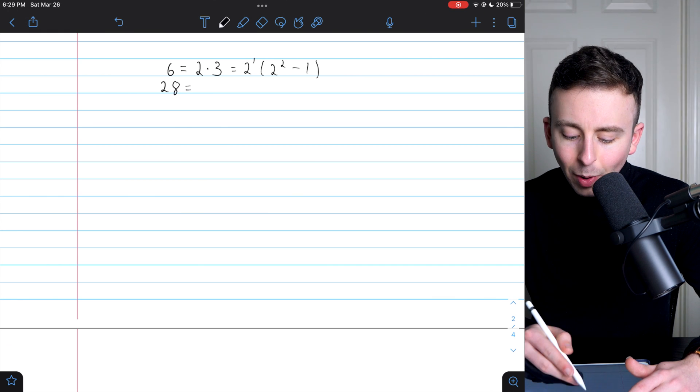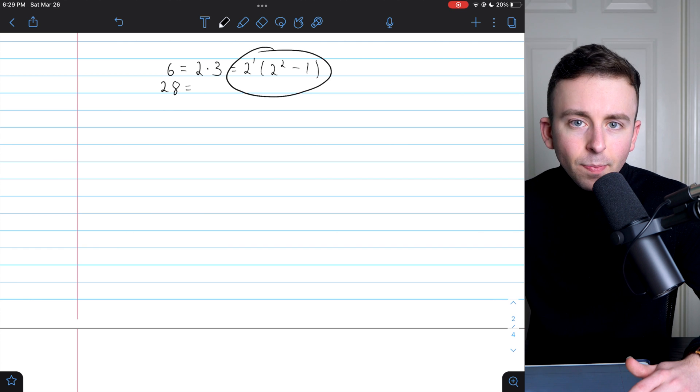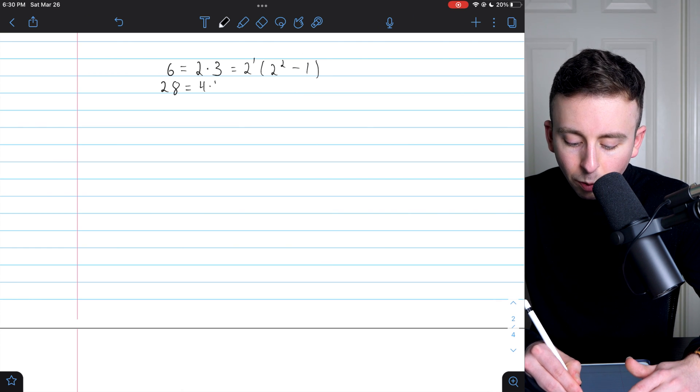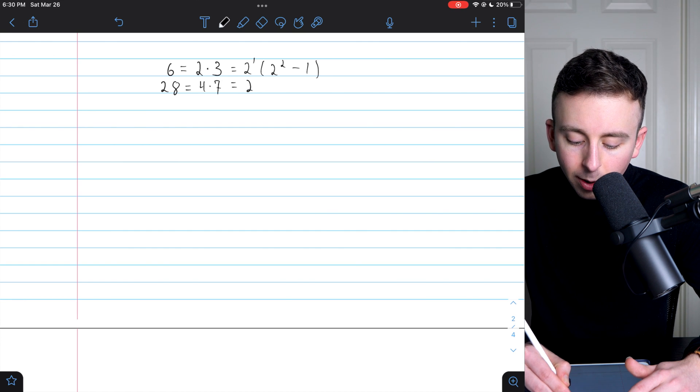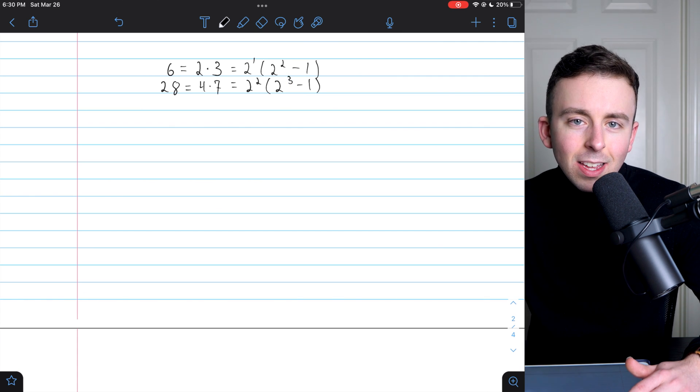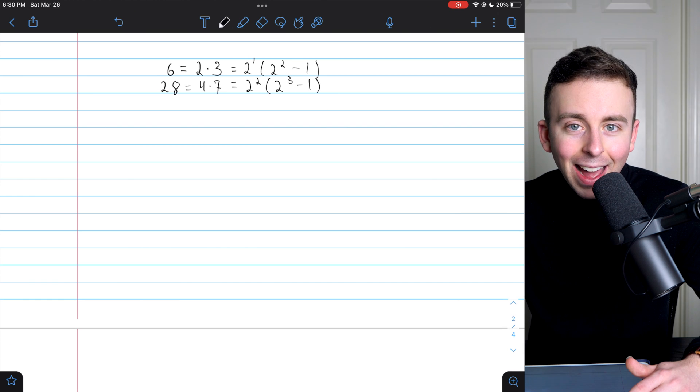What about the next perfect number, 28? Could we write it in a way that's similar to this? Indeed, we could. 28 is equal to 4 times 7. 4, of course, is 2 squared. And 7, you may notice, is 2 to the power of 3 minus 1.